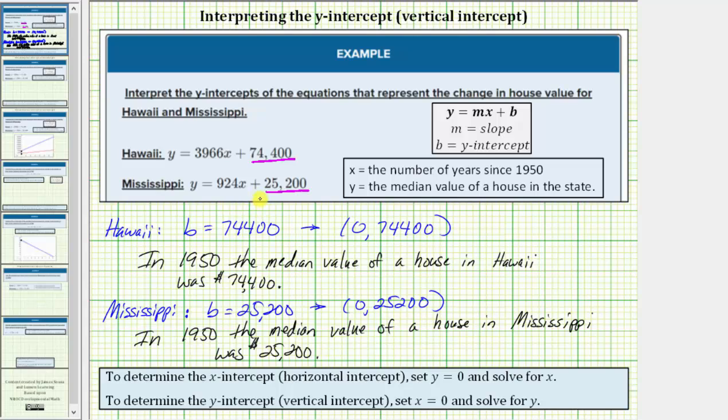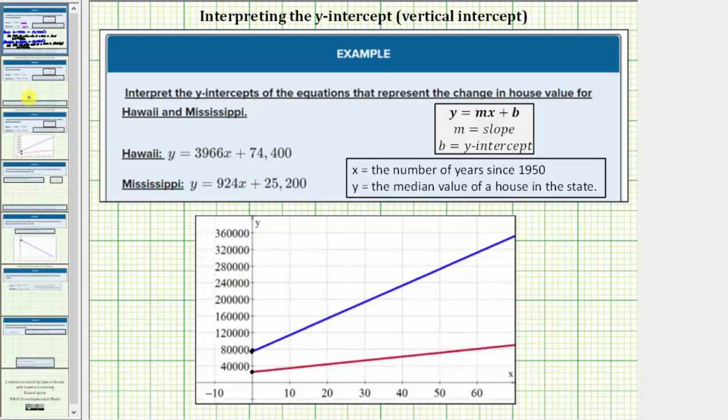Let's also take a look at the graph of these two equations on the coordinate plane. These are the two points where the lines cross or intersect the y-axis. These two points are the y-intercepts.